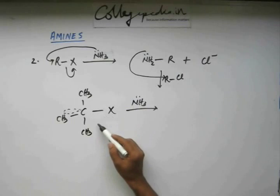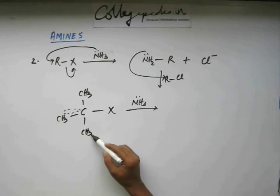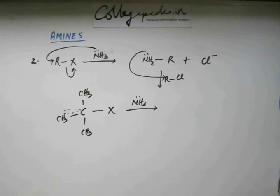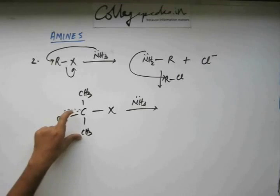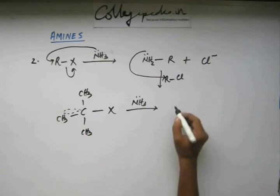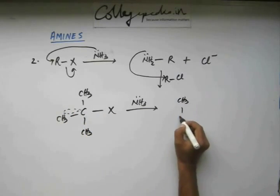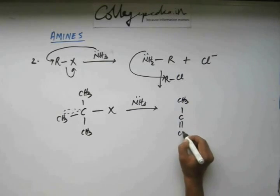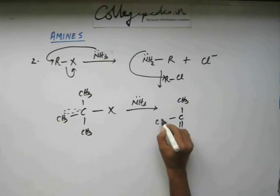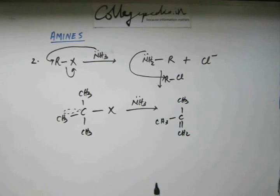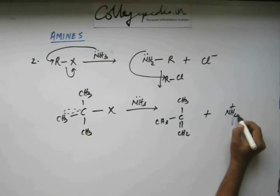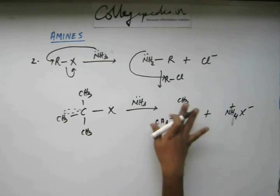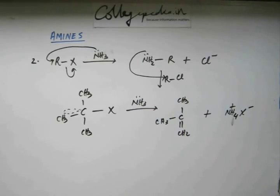In the case of a tertiary alkyl halide, elimination happens instead of substitution. Nitrogen abstracts one hydrogen from the adjacent carbon; that hydrogen gains a negative charge, which is transferred into the antibonding orbital to remove the halogen. The halogen leaves and a double bond forms, so we get an alkene instead of an amine.